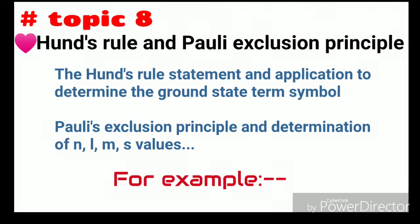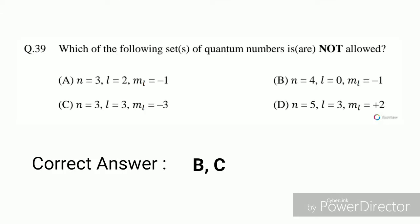And so this is all about it. For example, you can see an example of Pauli's exclusion principle, and this question is IIT JAM 2018 question, and the correct option of this question - this is a multiple select question and the correct options are B and C.